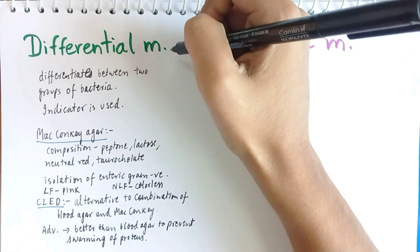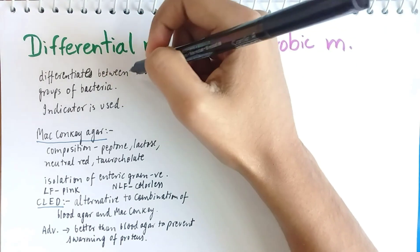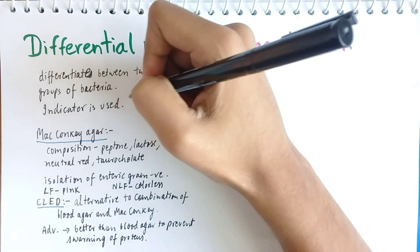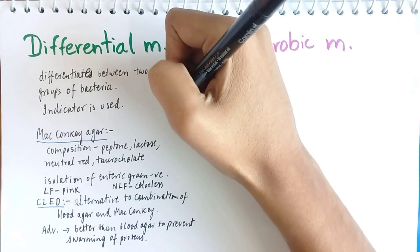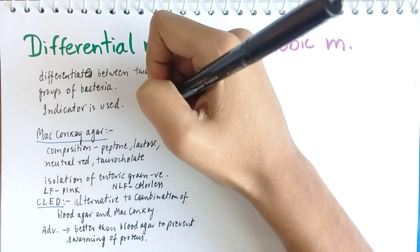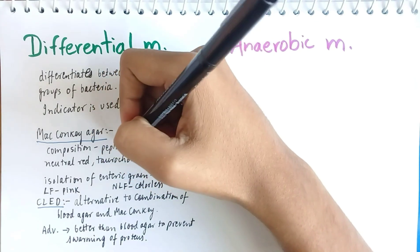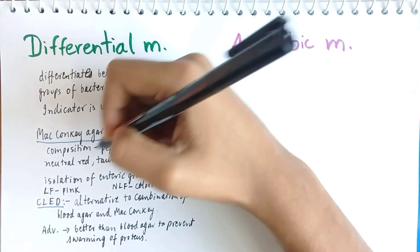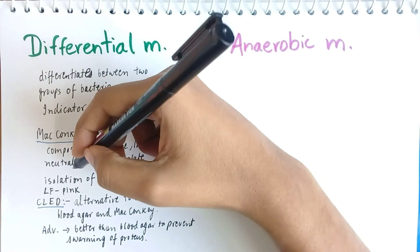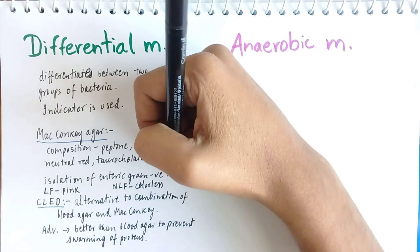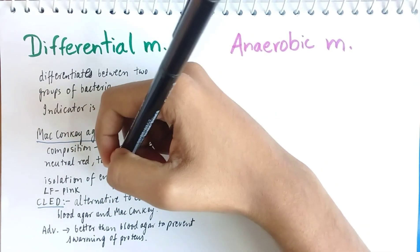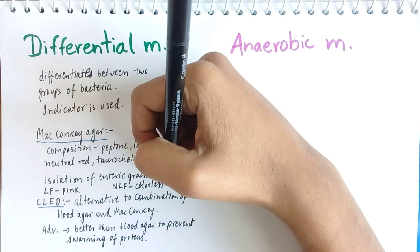Moving on to differential media — it is used for differentiating between two groups of bacteria, and an indicator is used to color the colonies of a particular group. MacConkey agar is one example of differential media. Its composition is peptone, lactose, neutral red, and crystal violet. It is mainly used for isolation of enteric gram-negative bacteria. Lactose fermenting colonies appear pink in color, whereas non-lactose fermenting colonies appear colorless.